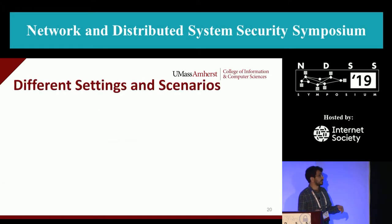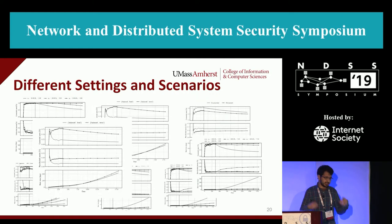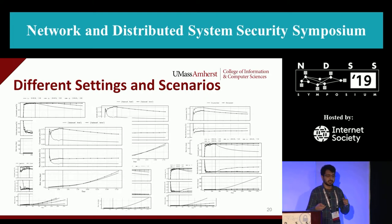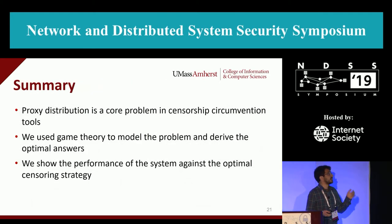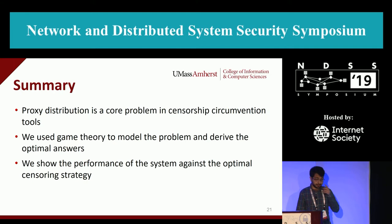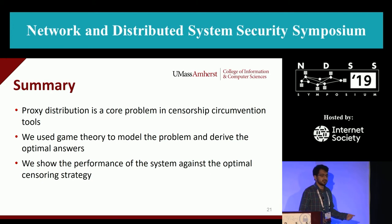We also did several other experiments comparing different cases and scenarios, extracting about seven important lessons to help developers build better censorship circumvention tools. As a summary: we showed that proxy distribution is a core problem in censorship circumvention tools; we used game theory to model the problem and find an optimal solution; and we showed that it's important to evaluate the performance of the system against the optimal censor of that system, not just any censor. Thank you for your attention.